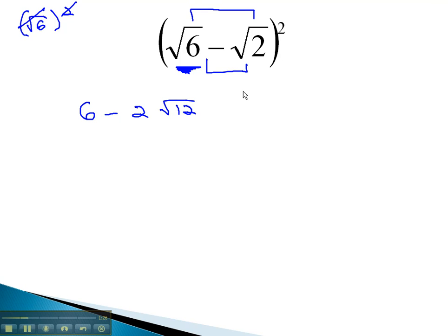Again, we'll square the last term at the end. And just as before, when we square a square root, the square and the square root undo each other, leaving just the positive 2. When we combine like terms, 6 plus 2 is 8, minus 2 root 12.